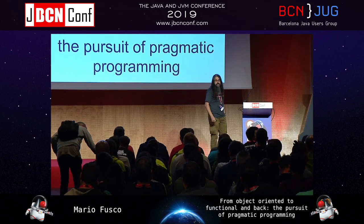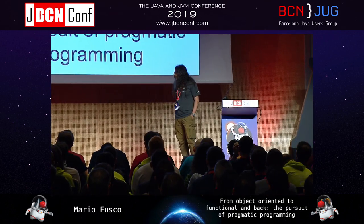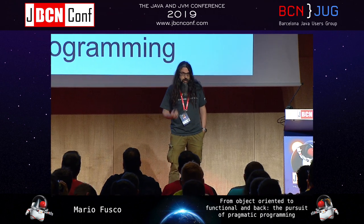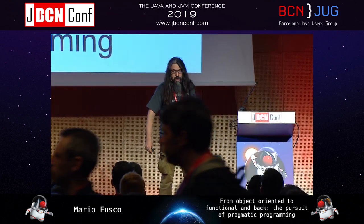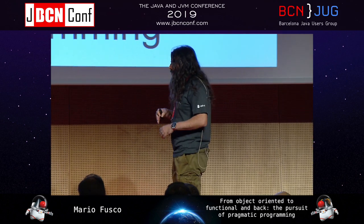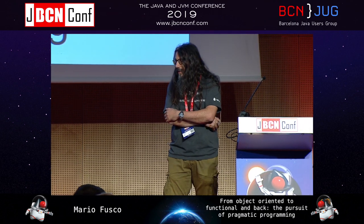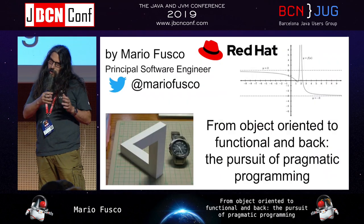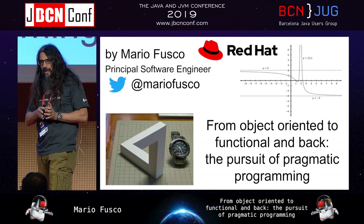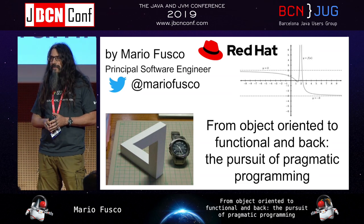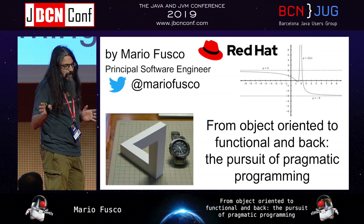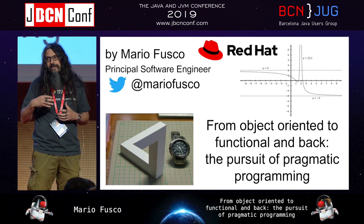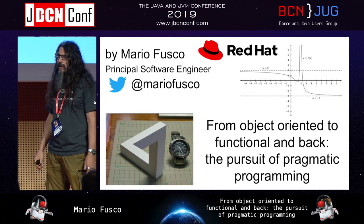Hi guys, thank you for coming. My name is Mario Fusco. I work for Red Hat. I'm the project leader of Drools, the Drools engine of Red Hat, and I'm here to talk about my travel during these last 20 years as a developer — my travel from extreme object orientation to sort of extreme functional programming, and then a little back in search for pragmatic programming.